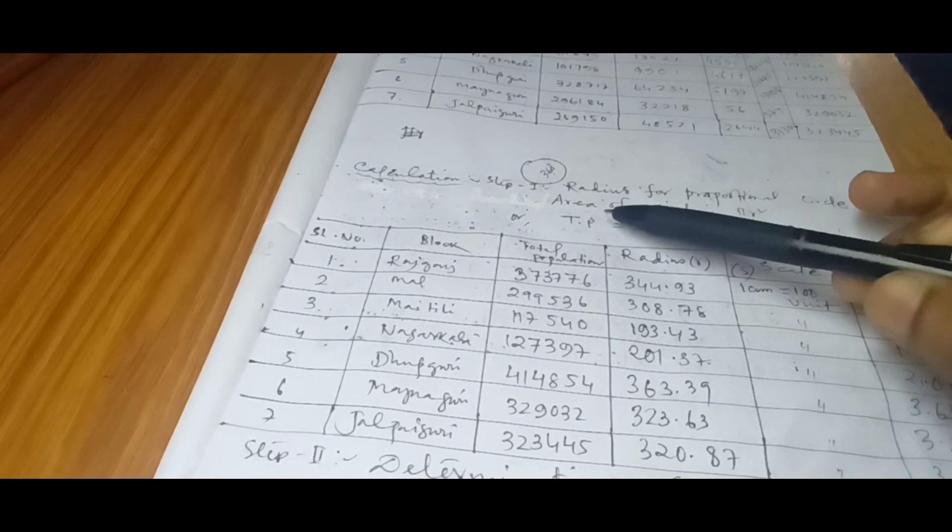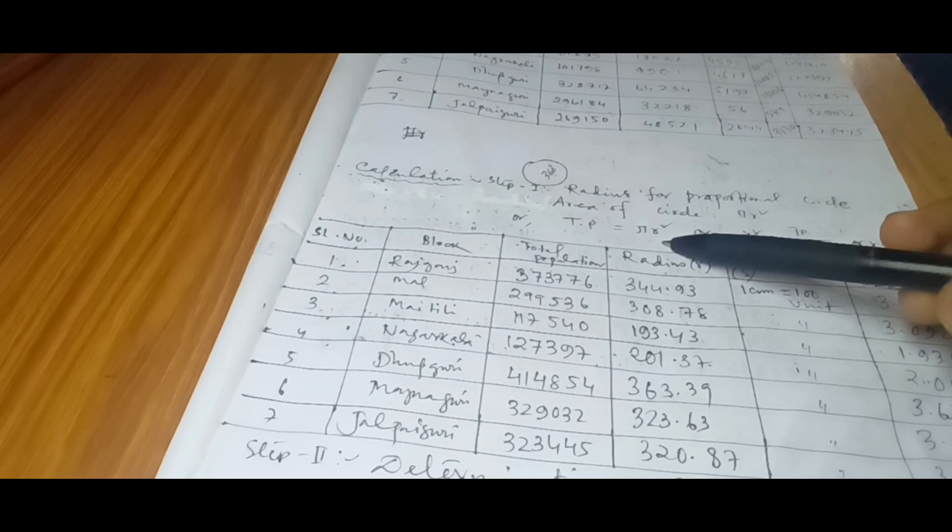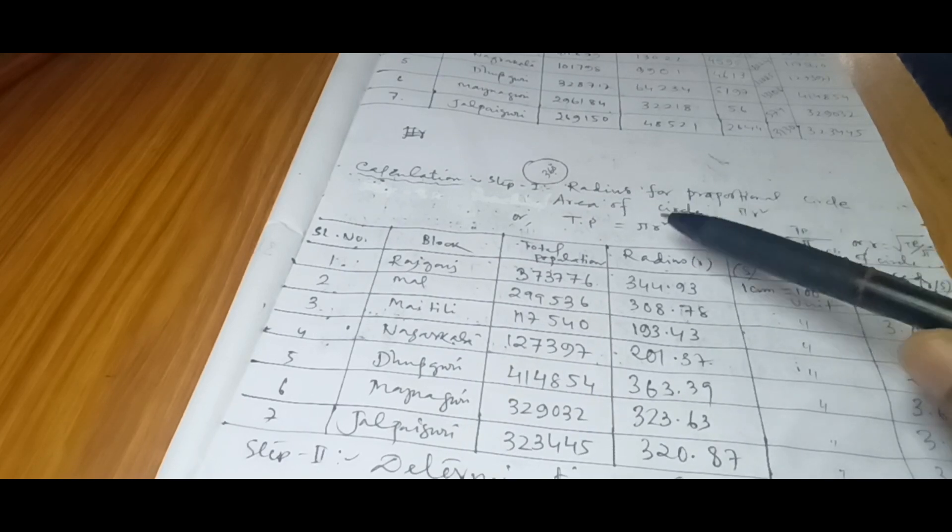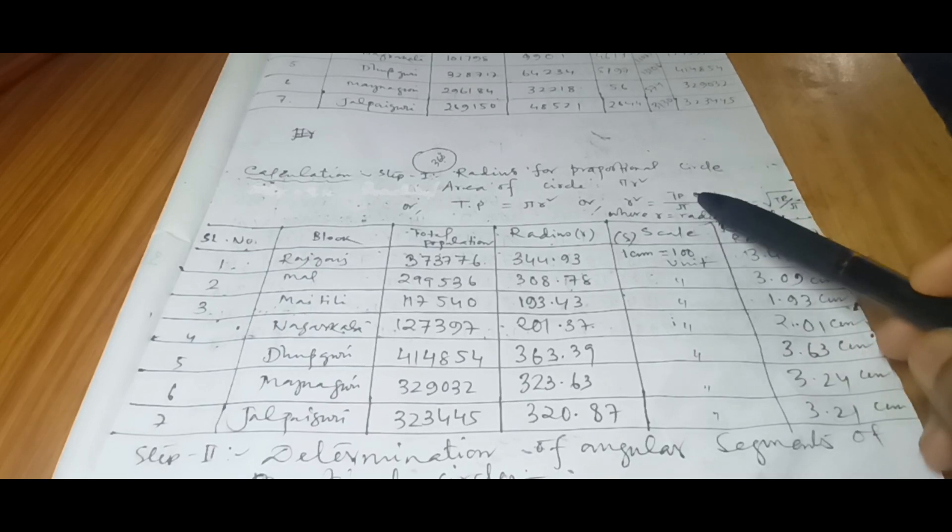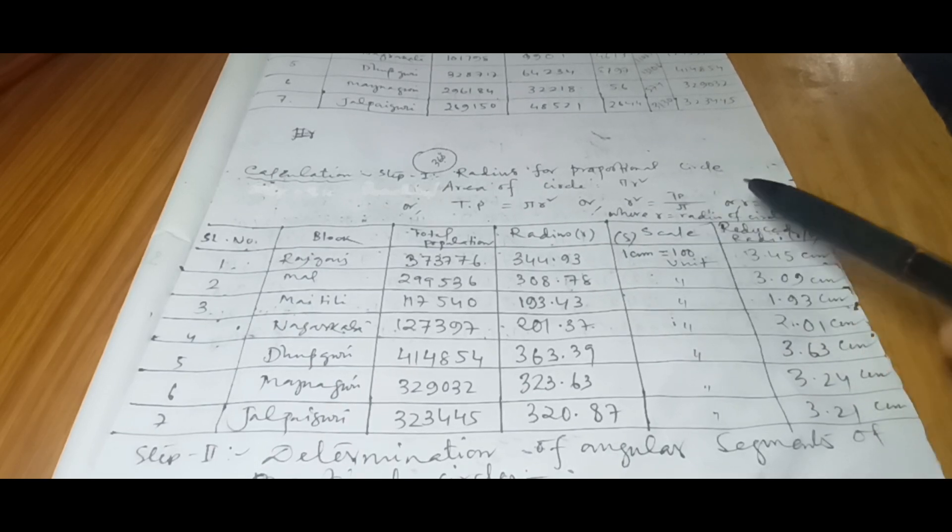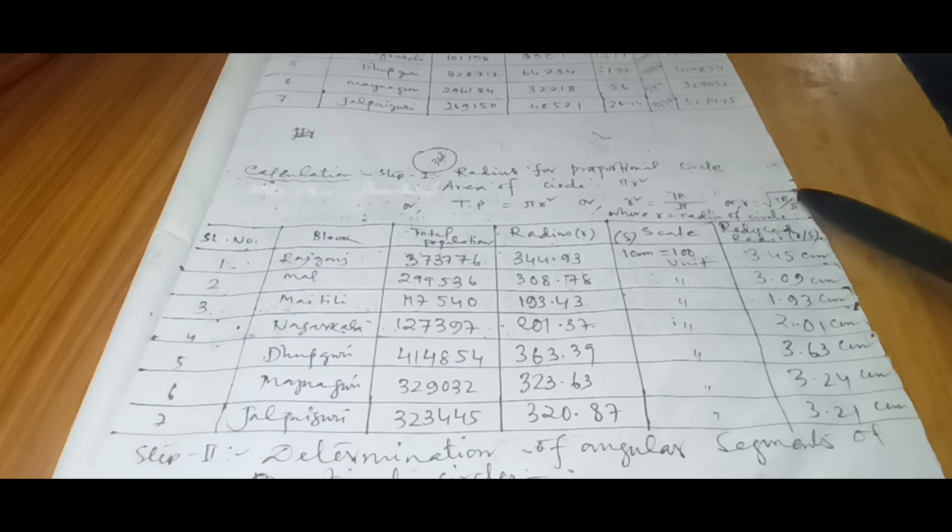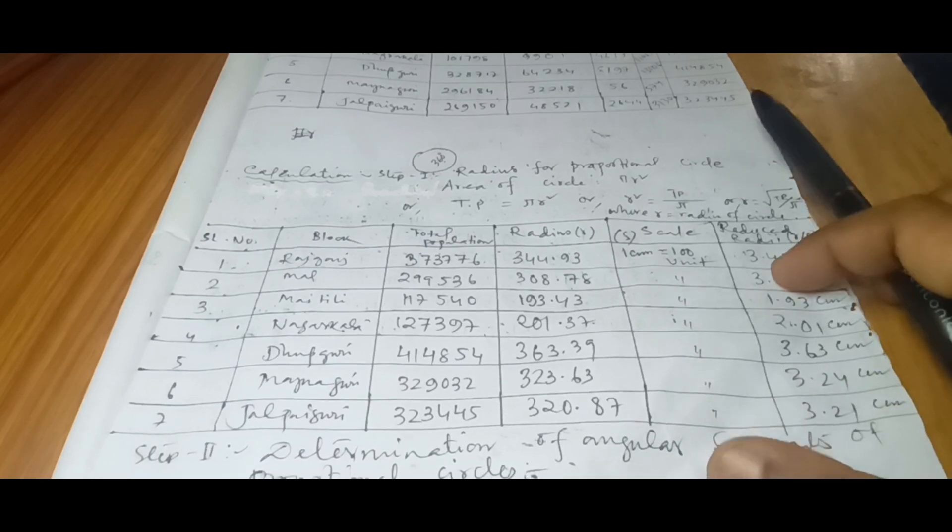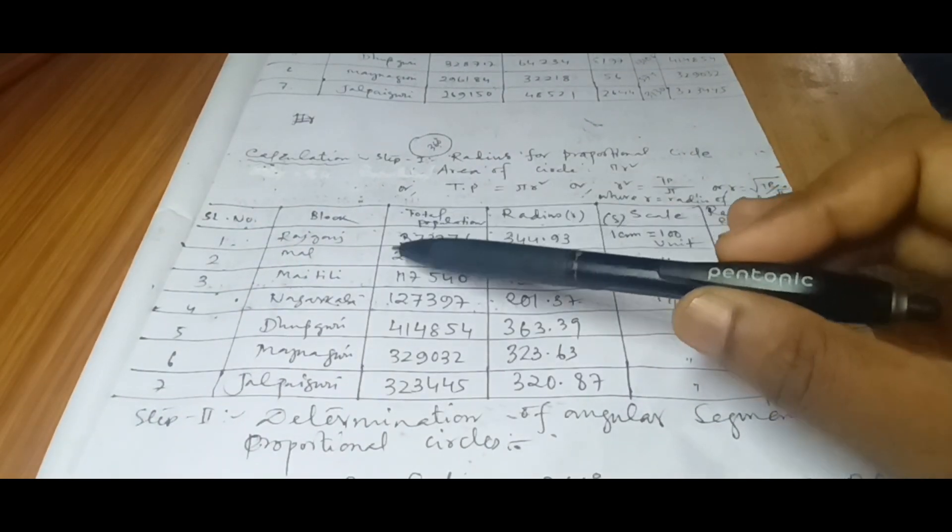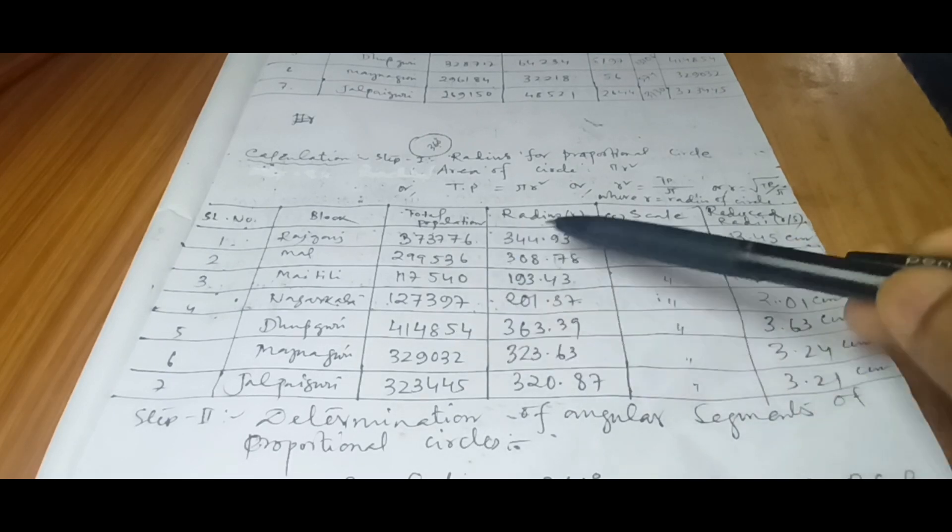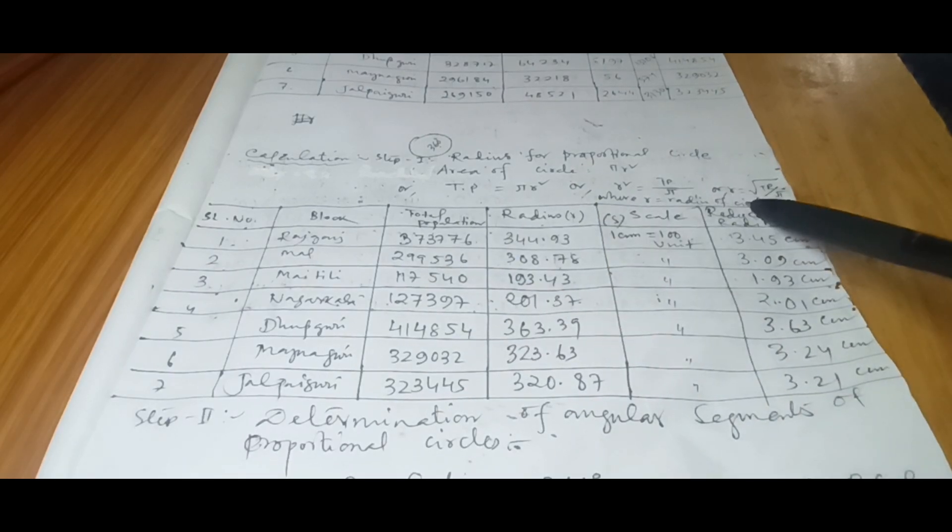That is total population divided by π. Then there will be a root, so r = √(total population / π). Now from this formula you will get the radius of the circles to draw the proportional circles. So these are all the blocks, total population, and after applying the formula, this radius has been calculated.